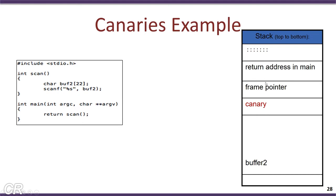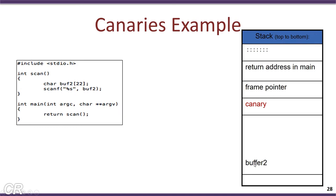Now let us look at the stack. When main invokes scan, there is the return address pushed onto the stack — corresponding to the address just after the scan call in main — then the previous frame pointer, then the compiler inserts a canary, and there are 22 bytes of space for buffer 2. Let us see what happens when we run this program and give a large input much larger than 22 bytes.